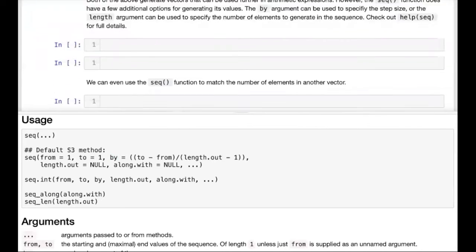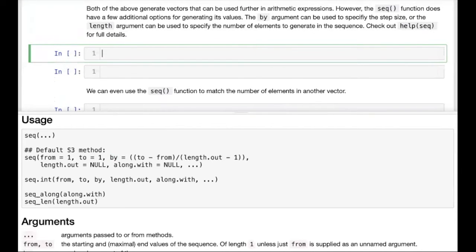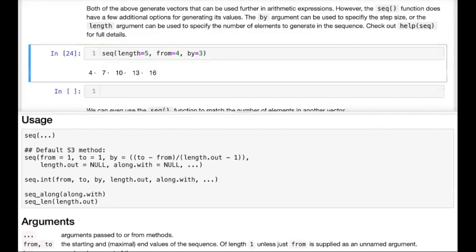For example, if I want a sequence with 5 elements, starting from 4 and then proceeding in steps of 3, I can write sequence with length equals 5, from 4, so that we get the initial value of 4 in our sequence, and then our step size is 3 by saying by equals 3. And when we run this code block, you see that we get exactly that.